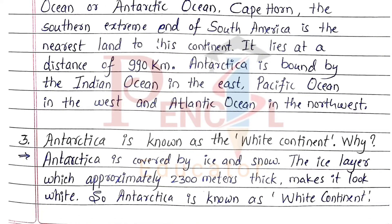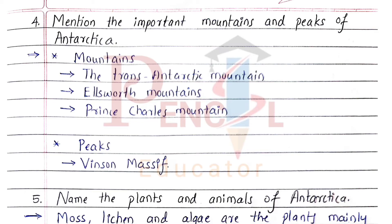3rd Question: Antarctica is known as the White Continent. Why? Antarctica is covered by ice and snow. The ice layer, which is approximately 2300 meters thick, makes it look white. So Antarctica is known as the White Continent.